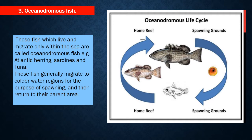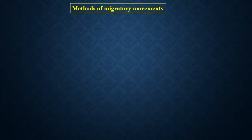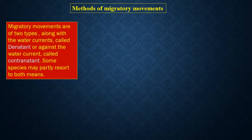Oceanodromous fish generally migrate to colder water regions for the purpose of spawning and then return to their parent area. Methods of migratory movements are of two types: along with the water currents, called denotent, or against the water current, called contranotent. Some species may partly resort to both means.